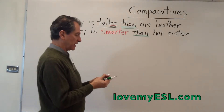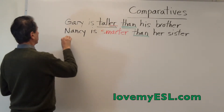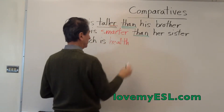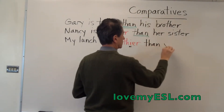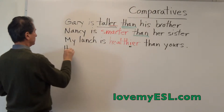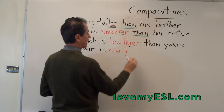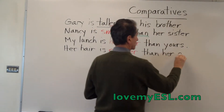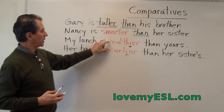Now, what happens if a word ends in a Y? We have lots of those words in English. If a word ends in Y, like 'healthy,' you would say something like: my lunch is healthier — H-E-A-L-T-H-I-E-R. The Y on the end changes to -IER. So make sure you change that Y to an I: healthier than yours. Another example: her hair is curlier — C-U-R-L-I-E-R. The Y changes to an I and then you put the -ER on the end. Curlier than her sisters. So this is what you do when you have an adjective that ends in Y — you change it to -IER.